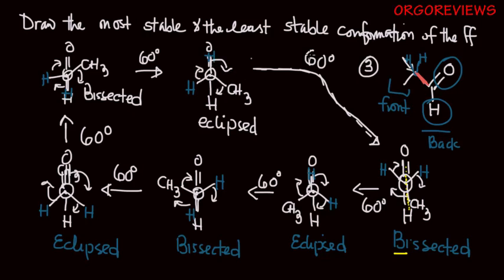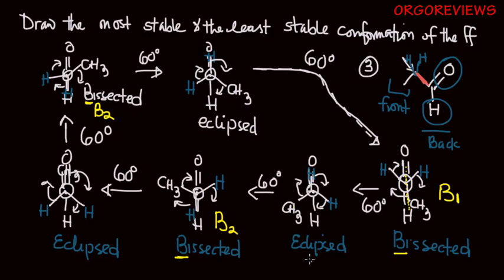After the full rotation sequence, you get back the bisected conformation. These are labeled: the bisected where the methyl group is near a hydrogen is B1, and the bisected where only hydrogens interact is B2. For the eclipsed conformations: E1 has hydrogens overlapping with the carbonyl, and E2 has the methyl group overlapping with the carbonyl. The E1 conformations are the same.